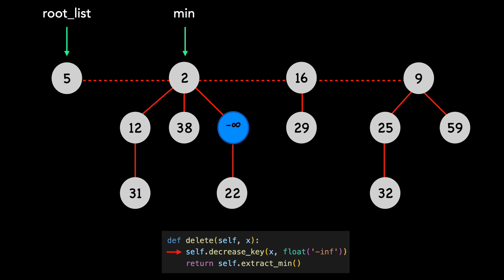Remember as part of the decrease key method, we do any necessary cut and cascading cut operations. I won't display the code for this, as I've made a separate video on this topic. We perform a cut of the node in this child, moving it to the end of the root list.